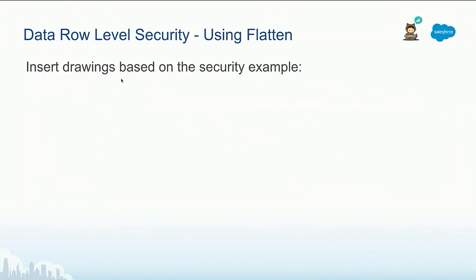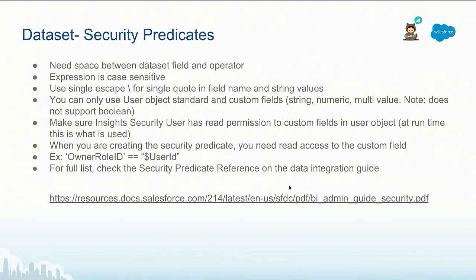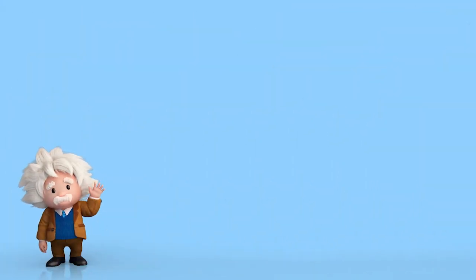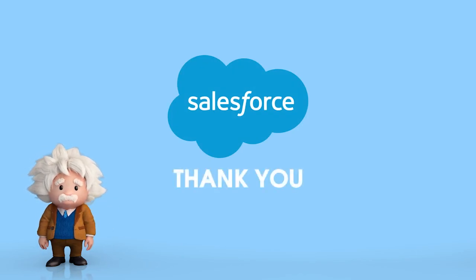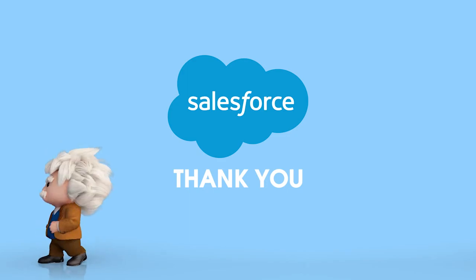Just as a reminder, this is the drawing shown in the previous section, based on the diagram on paper. Keep in mind that security predicates have certain syntax requirements — for example, how you place spaces, whether to use single or double quotes, and how to escape characters. Check the documentation; we're currently on version 216 and Spring 19 (218) is coming soon. Search for the 'ISA Analytics Security Guide' to find the security predicates requirements. Have a great day.